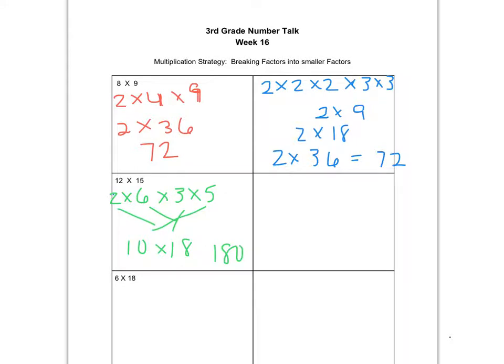Maybe you say, I wouldn't even go that far. I would leave the 12 intact and actually just break down the 3 times 5, because I know 5 times 12 is 60, and 60 times 3 is 180.